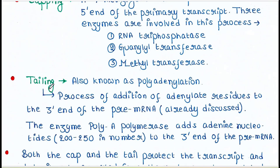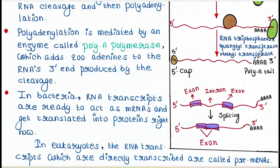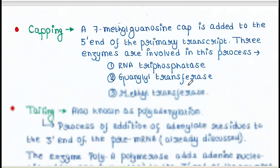The next process is tailing, also known as polyadenylation. The process of adding adenylate residues to the 3' end of the pre-mRNA is called tailing. The enzyme poly-A polymerase adds adenine nucleotides to the 3' end of the pre-mRNA, and 200 to 250 adenine residues are added.